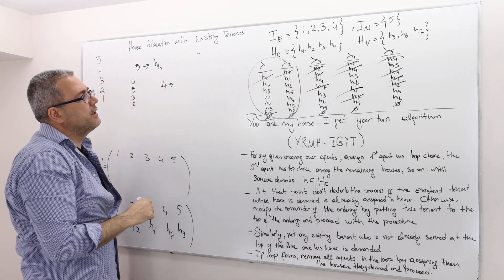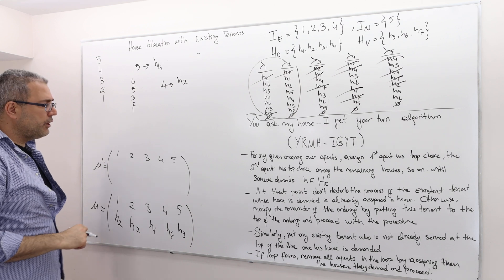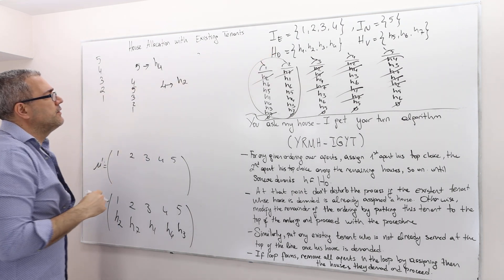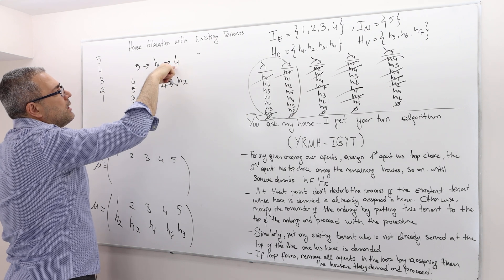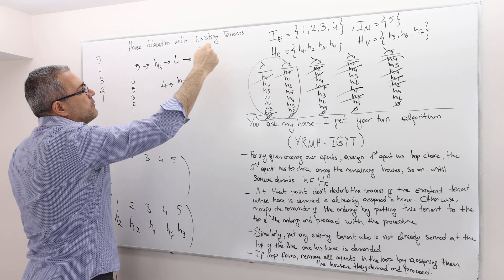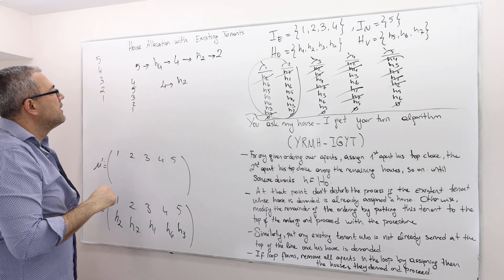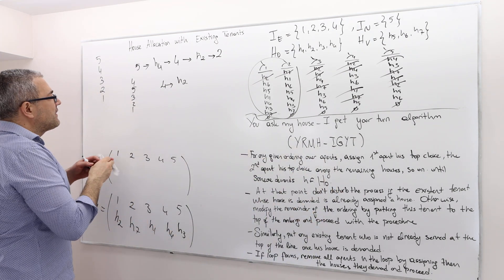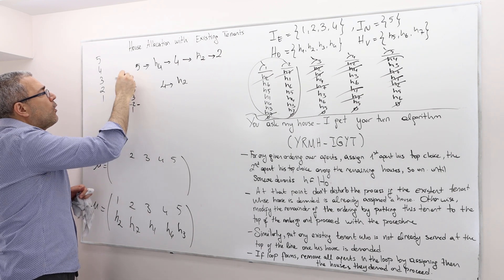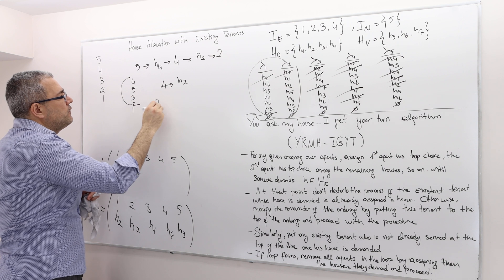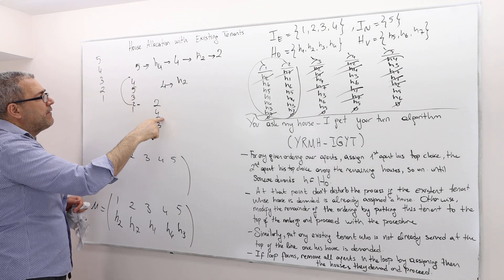Agent 4's top choice is house 2. Is house 2 occupied? Yes, it is — occupied by agent 2. So agent 5 asked for house 4, which belonged to agent 4, and agent 4 asked for house 2, which belonged to agent 2. Agent 2's house has been demanded, so agent 2 moves to the top. The new list becomes 2, 4, 5, 3, 1.